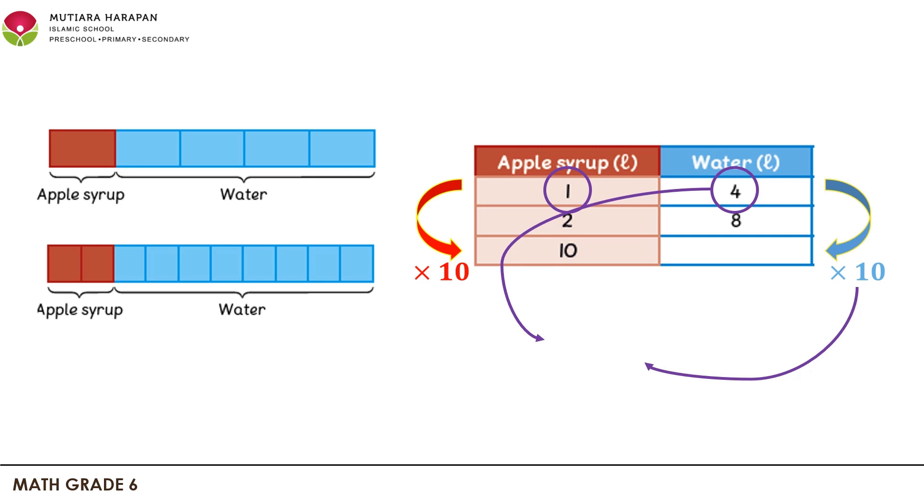So 4 times 10, the result is 40. So if we use 10 liters of syrup, we need 40 liters of water.